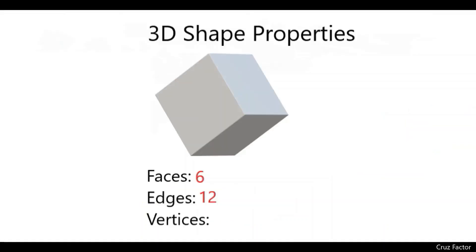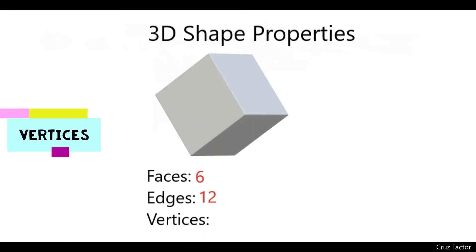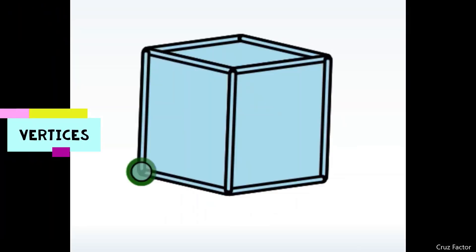Now let's take a look at the number of vertices that this cube has. I've got a highlight of where the first vertex is here. That's basically where the corners meet on the side — so it's where this and this meet, making a corner. That's the vertex.